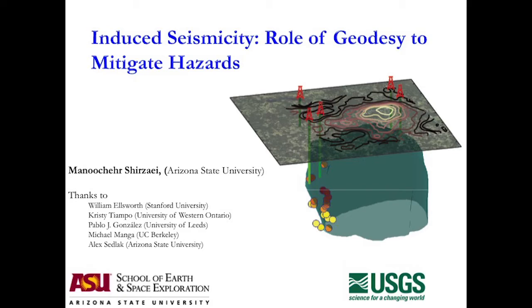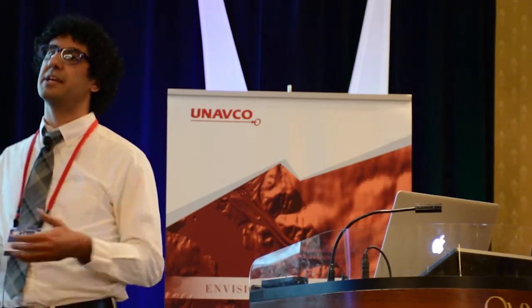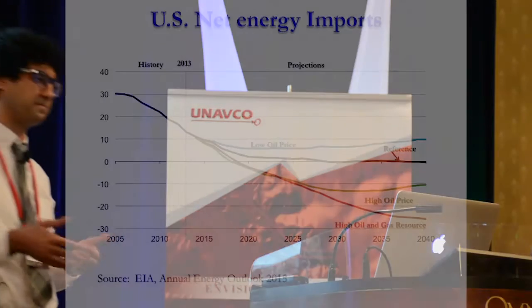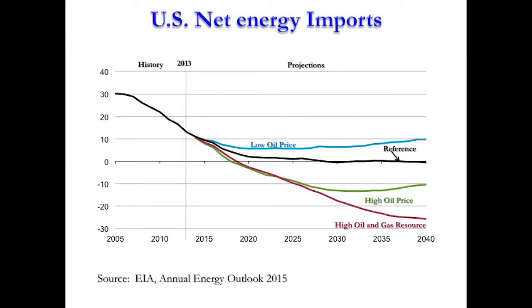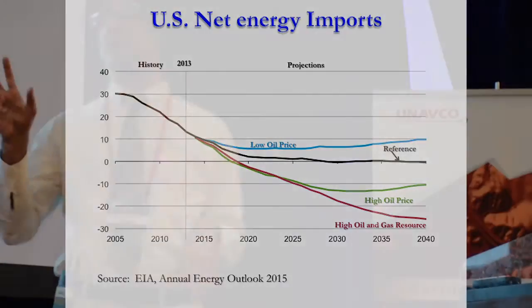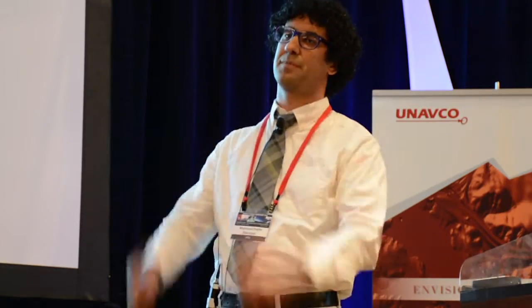We hear a lot about induced seismicity nowadays for many reasons. The most important one is fracking — an unconventional approach to produce oil and gas from layers we could not reach before. This diagram shows that thanks to fracking, in a few years the United States might become independent from importing oil. It's great news — jobs, money. Of course, there is a condition: we have to convince our Saudi and Russian friends to reduce their oil production so we can jack up the price.